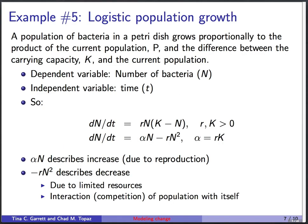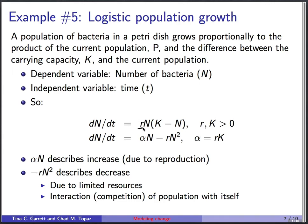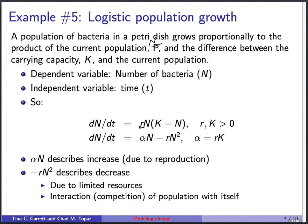The next example is logistic population growth. A population of bacteria in a petri dish grows proportionally to the product of the current population N and the difference between the carrying capacity K and the current population. The dependent variable is the number of bacteria N; the independent variable is time t. So dN/dt equals r times N times (K minus N), where r and K are both positive numbers greater than zero.